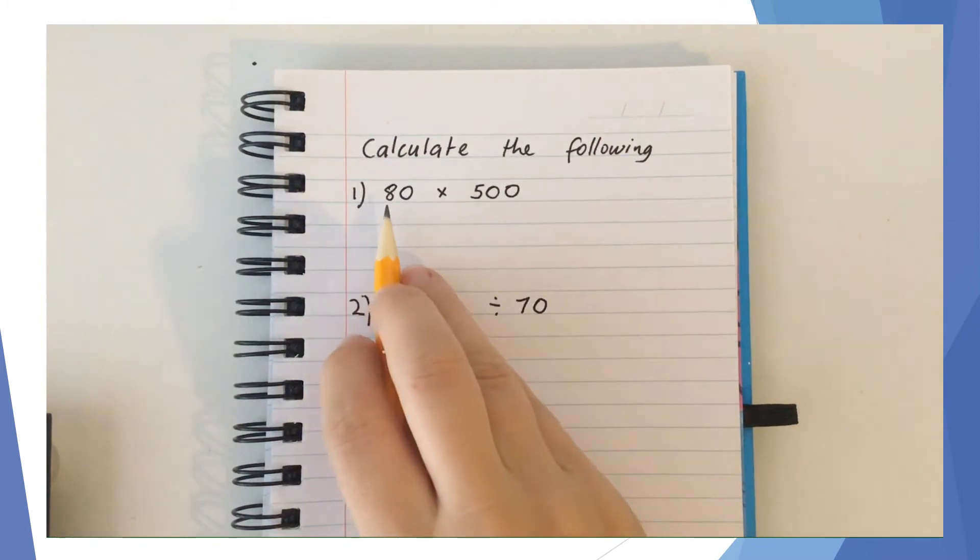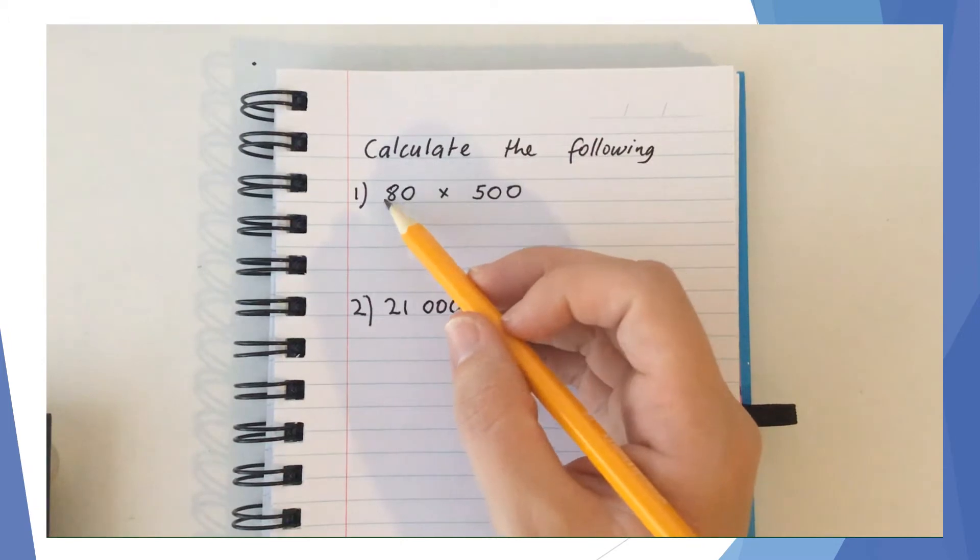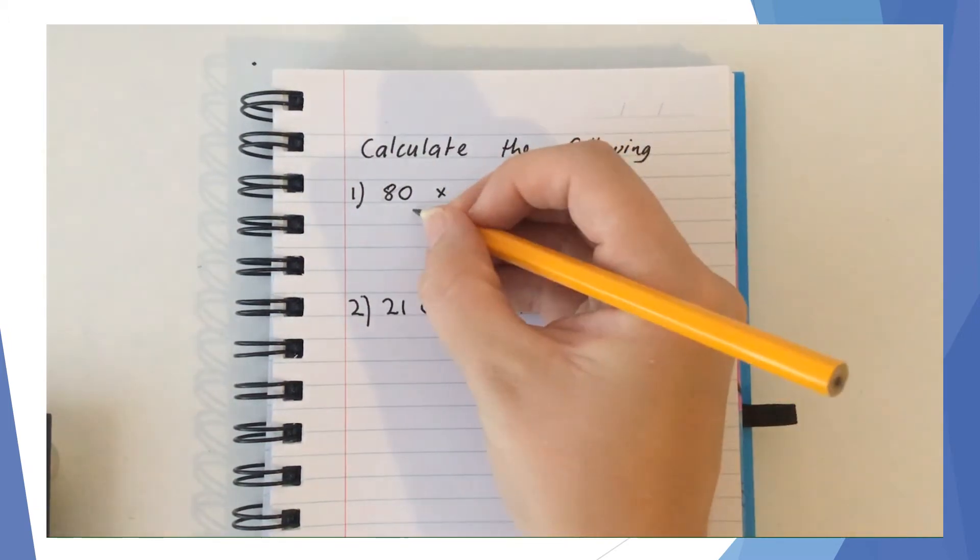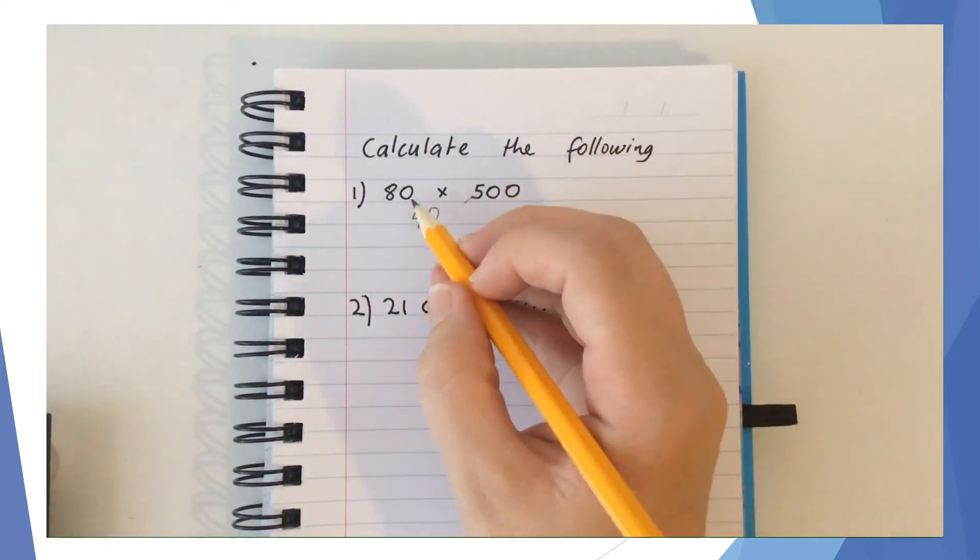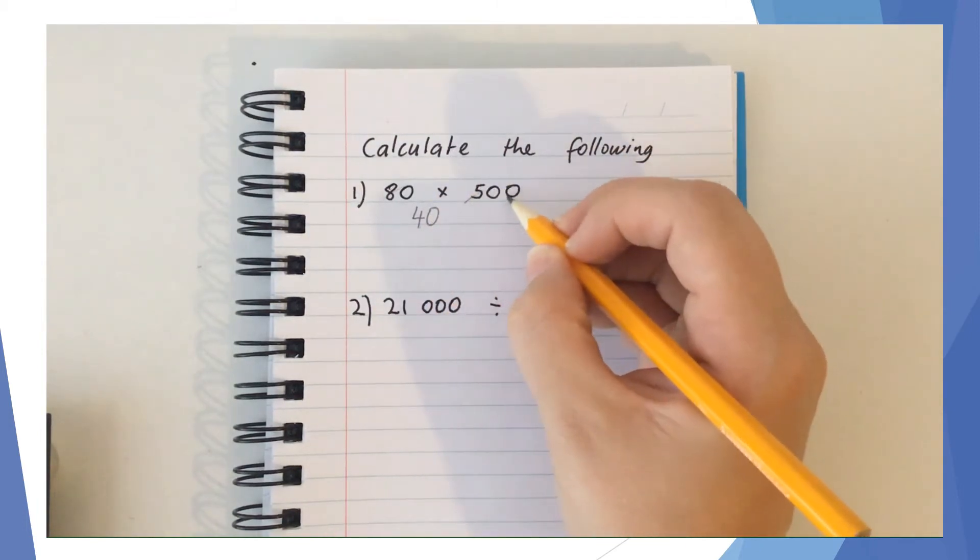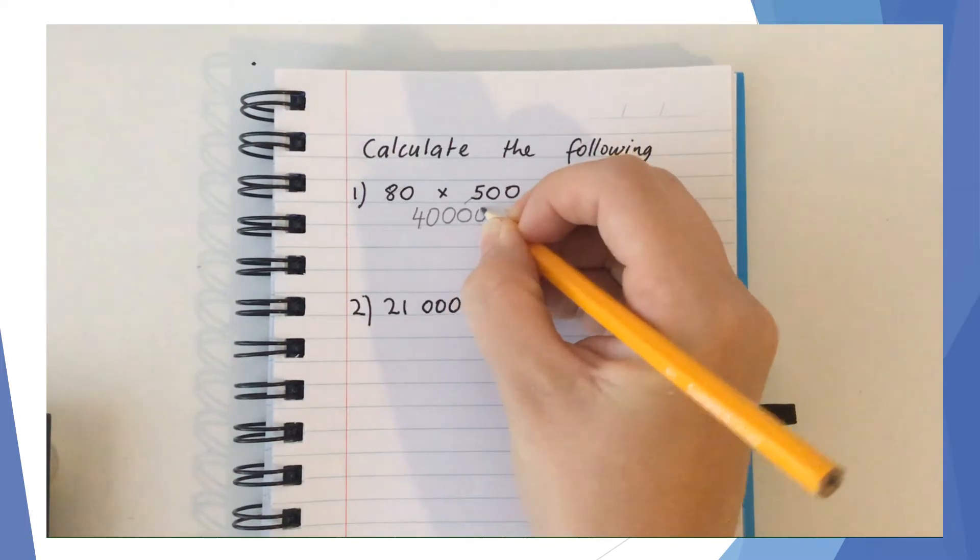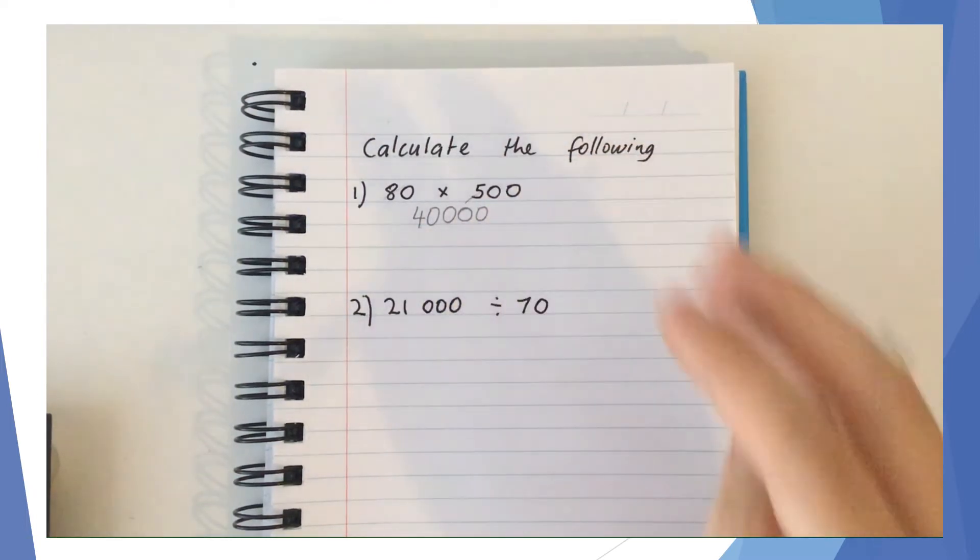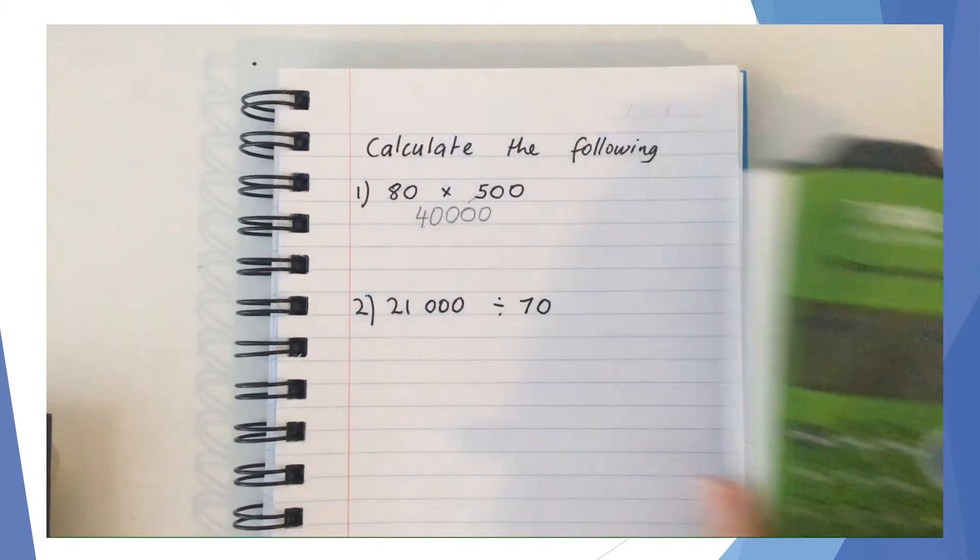Calculate the following. In the first case, we're doing 80 times 500. The first part I'm going to do is 8 times 5, which is 40. I then have one lot of 10 over here and two over here, so I need to put three zeros afterwards. The answer to 80 times 500 is 40,000. If I check that on my calculator, the answer is 40,000, so our answer is correct.